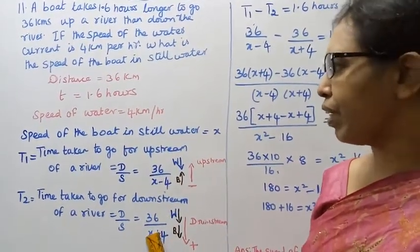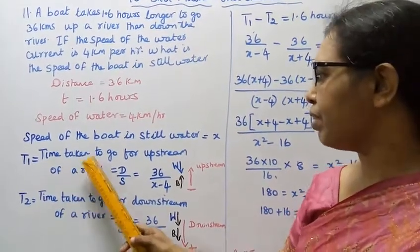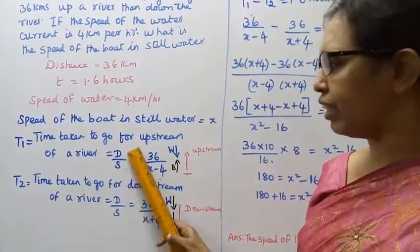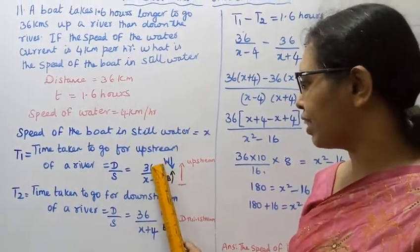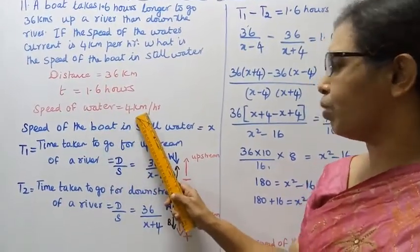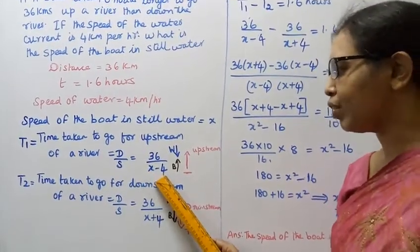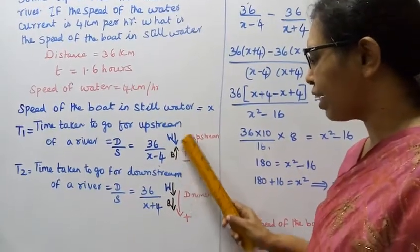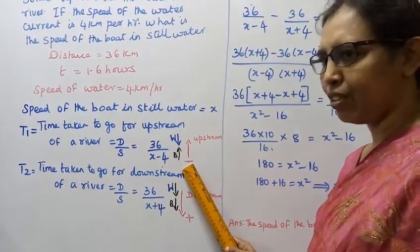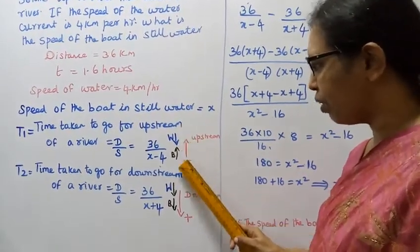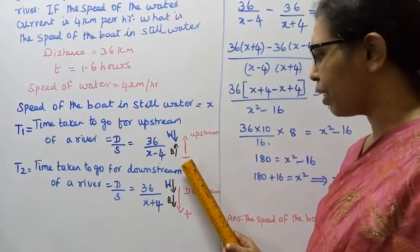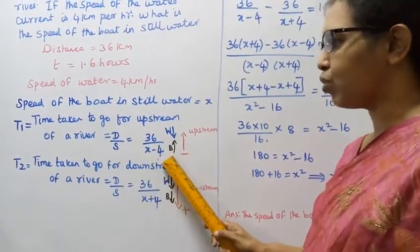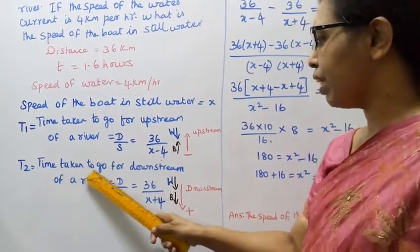Time taken to go upstream of a river, T1, equals distance by speed. Distance is 36, speed is x minus 4, where x is the boat's speed. Upstream, the board direction and water direction are opposite, so we subtract. T1 equals 36 divided by x minus 4.